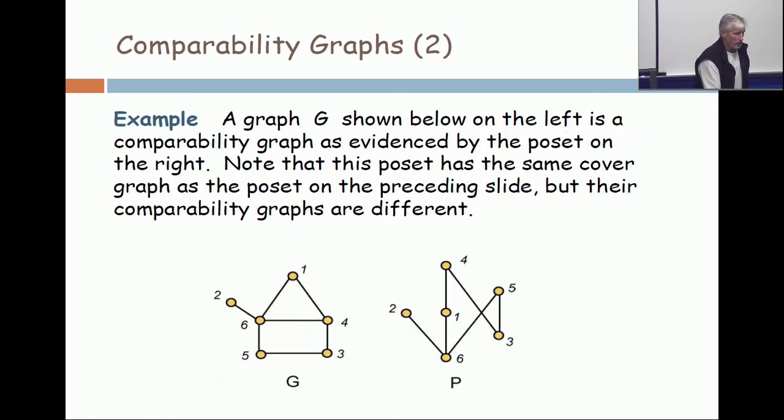Now, I'm going to go forward. The cover graph is a five cycle plus a dingle. The comparability graph has maximum clique size three.